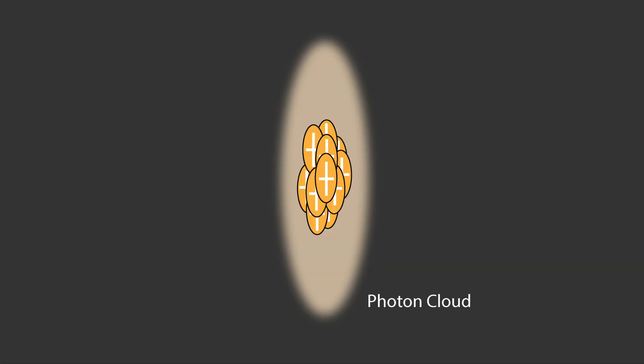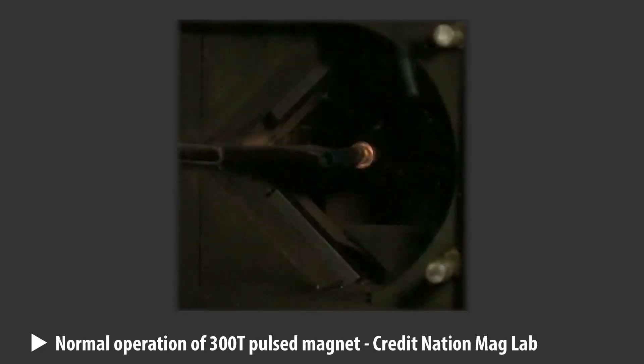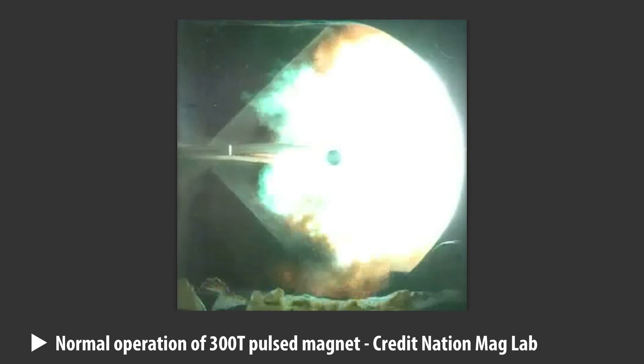In theory, this can produce a magnetic field in the order of 10 to the 14 to 10 to the 16 tesla. This is a monstrously large magnetic field. For comparison, the highest continuous magnetic fields that we can produce is around 45 tesla.